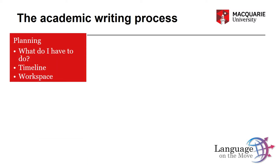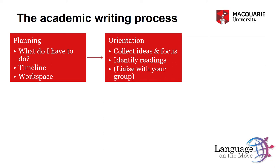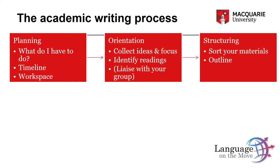The academic writing process consists of five steps. The first one is planning — you need to figure out what it is that you have to do. That's over in the instructions on iLearn. You need to figure out your timeline and set up your workspace. Once you've got those basics in place, you can move on to orientation: collecting your ideas, deciding on the focus of your assignment, identifying the readings that will be your key resources, and if it's a group assignment, liaising with your group. After orientation, you need to move on to structuring your assignment — sorting your materials and setting up your outline.